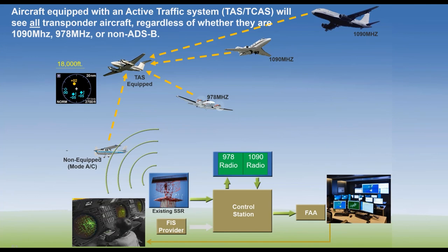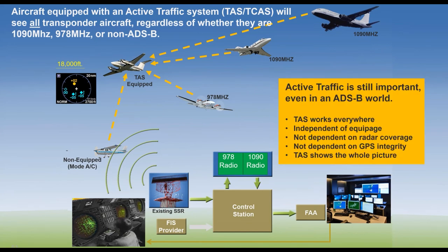Aircraft equipped with an active traffic system will see all the transponders, regardless of whether they're 1090, 978, or non-ADS-B. Active traffic is still important in an ADS-B world — it works everywhere. Flying outside the U.S. and Canada, where they don't have 978, TAS works with all transponders. It's independent of equipage, not dependent on radar coverage, not dependent on the integrity of the GPS signal. It shows the whole picture and is a great complement for ADS-B.